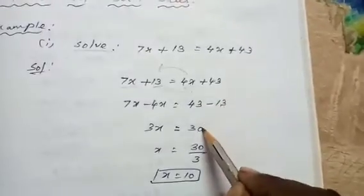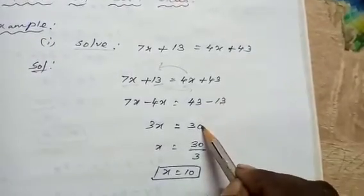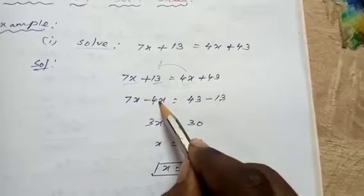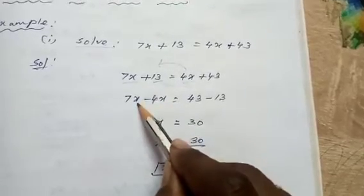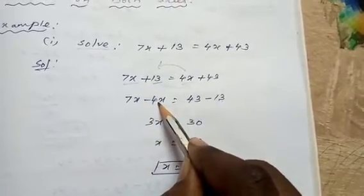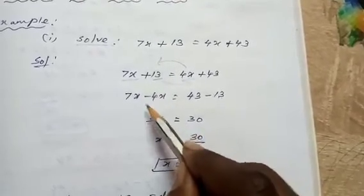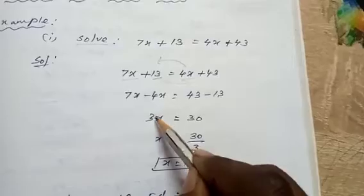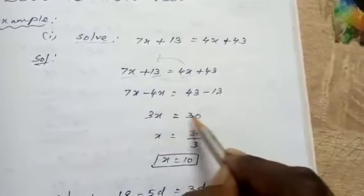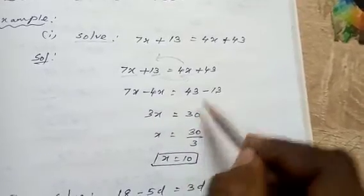43 minus 13 is equal to 30. On the left hand side, 7x - 4x: 7 minus 4 is 3, so we get 3x. Therefore, 3x = 30.